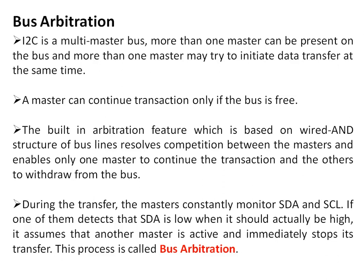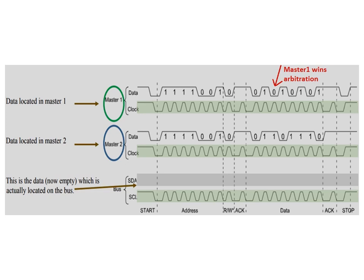This process is known as bus arbitration. Here we can see master one and master two both accessing the bus. Whenever master one transmits a zero, the bus is driven low. Master two observes this and stops accessing the bus, and master one continues accessing the bus.